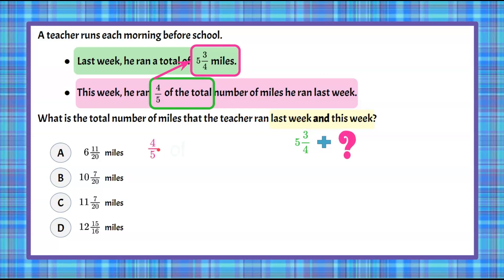This week, he did 4/5 of 5 3/4. If we rewrite that mathematically, it's going to be 4/5 times 5 3/4, which, written as an improper fraction to multiply, 4 times 5 is 20, plus 3 is 23/4. So now that we've written our mixed numbers as an improper fraction, we can multiply.